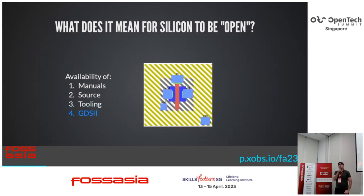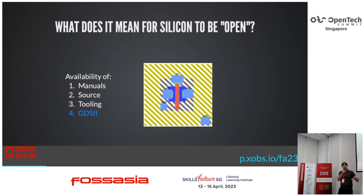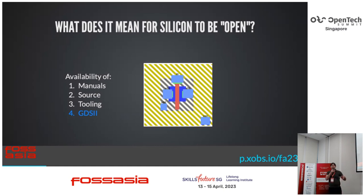And finally, the GDS2. A Gerber file is to a PCB what a PDF is to a Word document — it's the output you send to the PCB manufacturer. GDS2, sometimes called GDS, is the file that you send to the foundry that they will then turn into physical silicon. So if somebody has a GDS2 file, they have everything they need to give the foundry to copy the chip. And this is some of the rarest stuff when you want to make an open chip, because it means that anyone can just clone it.